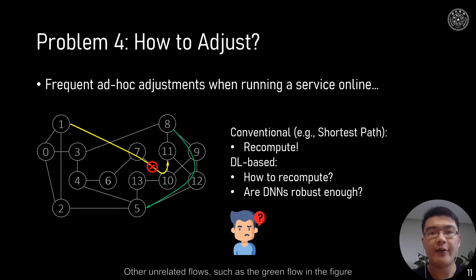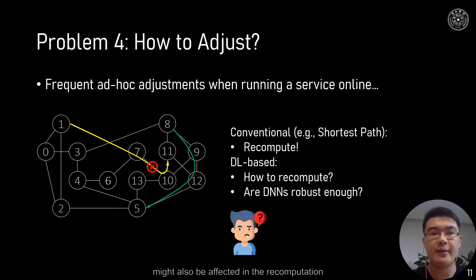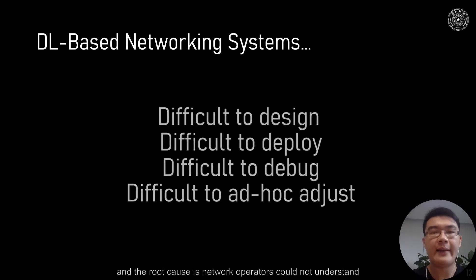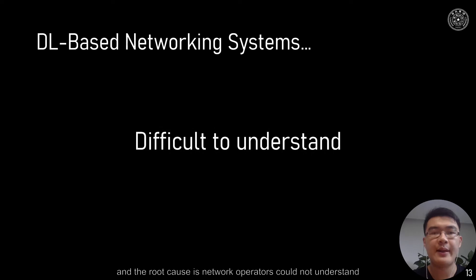Other related flows, such as the green flow in the figure, might also be affected in their computation. We now know that DNNs are difficult to design, deploy, debug, and ad hoc adjust for network operators. The root cause is that network operators cannot understand why deep neural networks make such decisions.